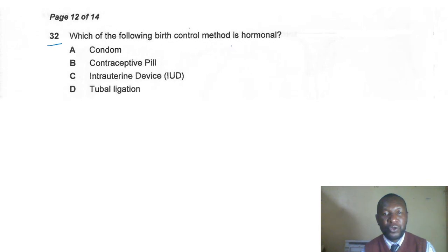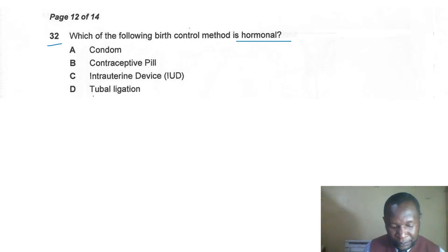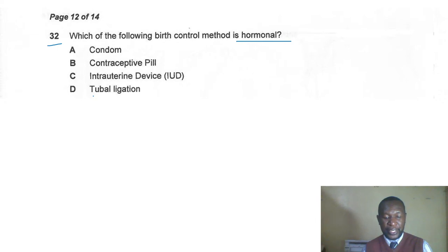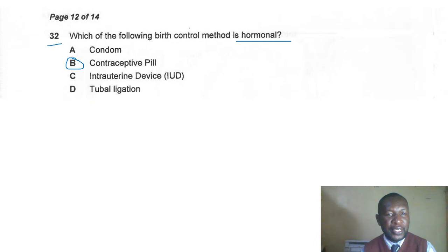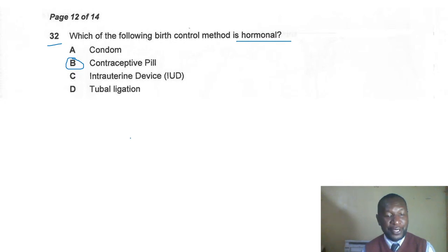Question thirty-two: which birth control method is hormonal? Is it condom, contraceptive pill, IUD, or tubal ligation? The correct answer is B — the contraceptive pill. It contains artificial progesterone, which mimics pregnancy so that no egg cells are released.